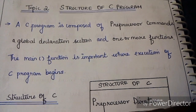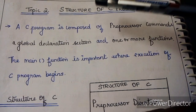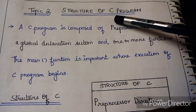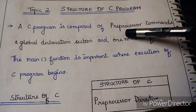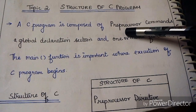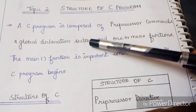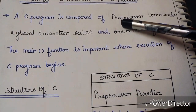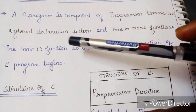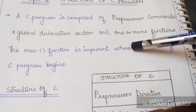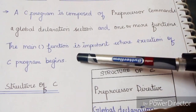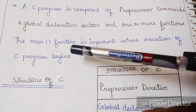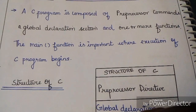Hi guys, welcome back. The second topic is the structure of a C program. Any C program you write can follow this structure. A C program is composed of preprocessor directives, a global declaration section, and one or more functions. The main function is very important — this is where execution begins.